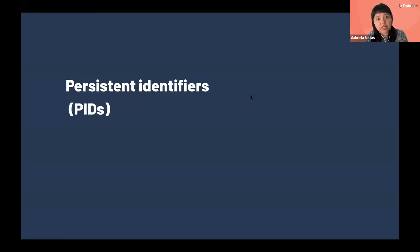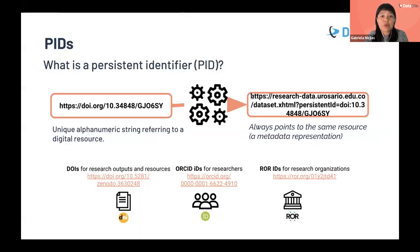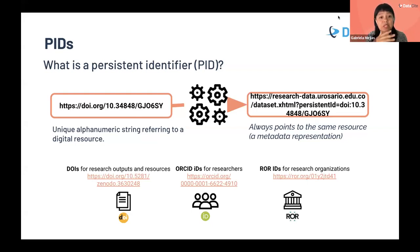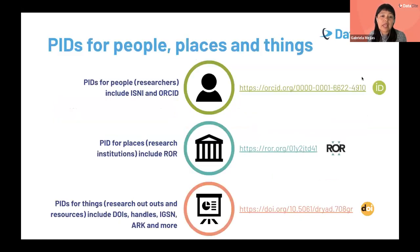To begin speaking about the infrastructure we provide, we need to speak about persistent identifiers. A persistent identifier is a unique alphanumeric string referring to a digital resource. This string always points to the same resource, which is a metadata representation — a landing page with metadata information. This can be updated over time, and this is what guarantees the persistence of that record. Persistent identifiers are important because they help identify entities across a research ecosystem, such as people, places, and things.